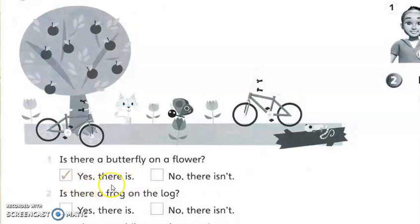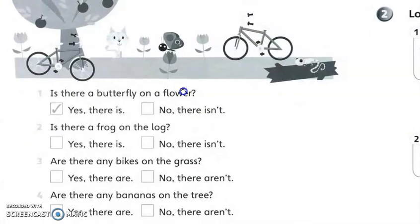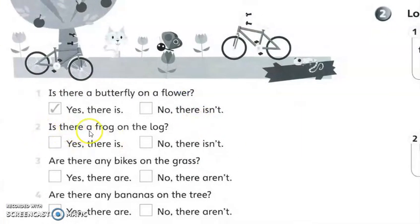Yes, there is. Here, ada. Kosongkan ni. Okay, itu latihan nombor 1. Yang kedua: Is there a frog on the log? Adakah terdapat katak di atas kayu balak? Dauk ni kayu balak, yang ni.